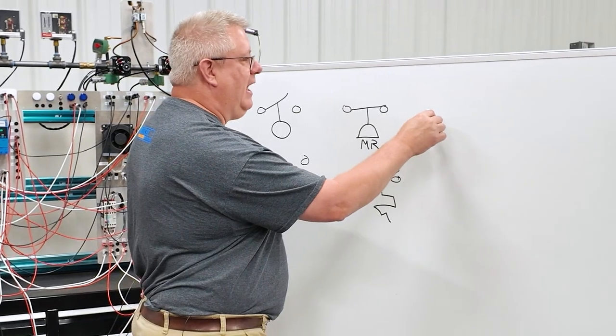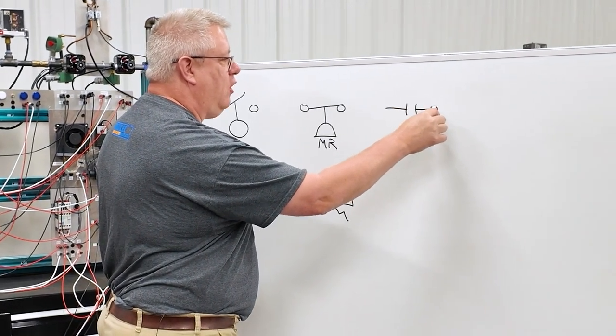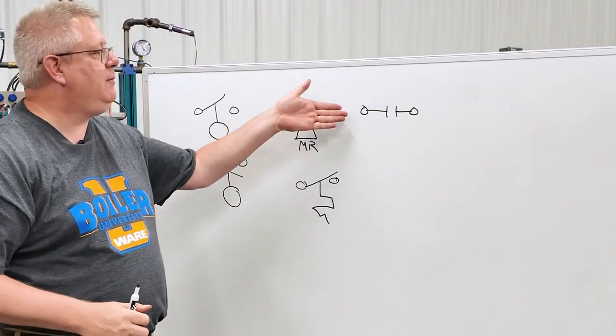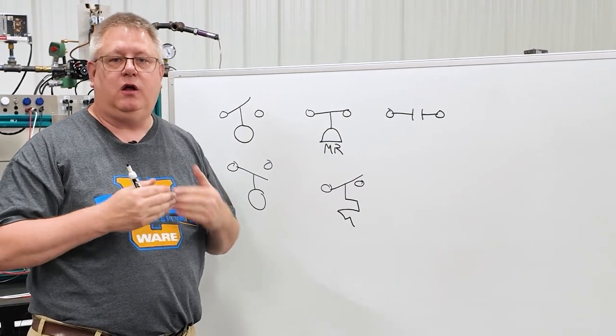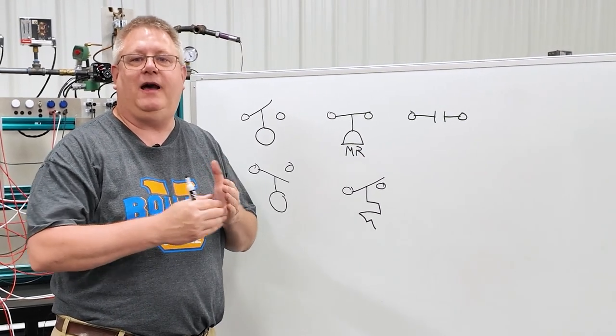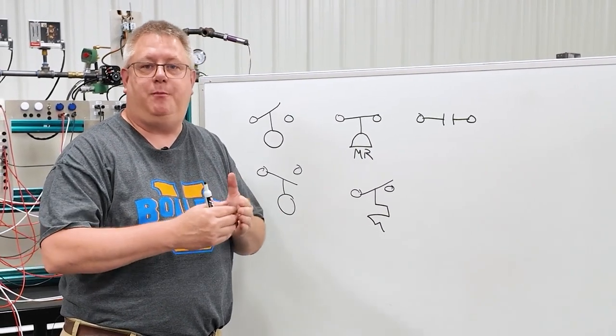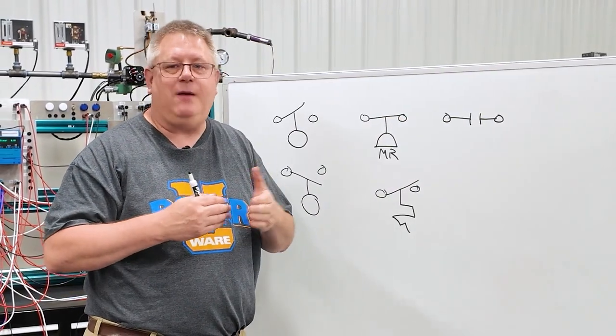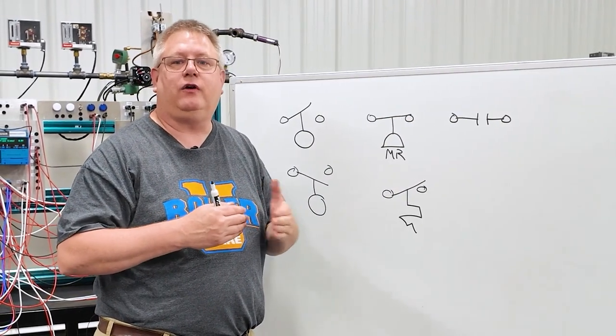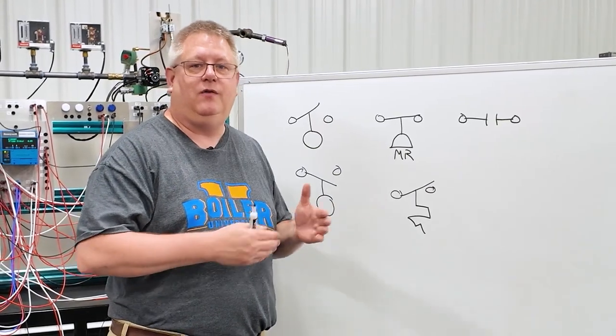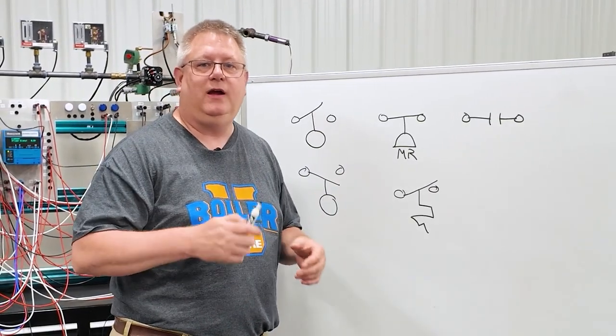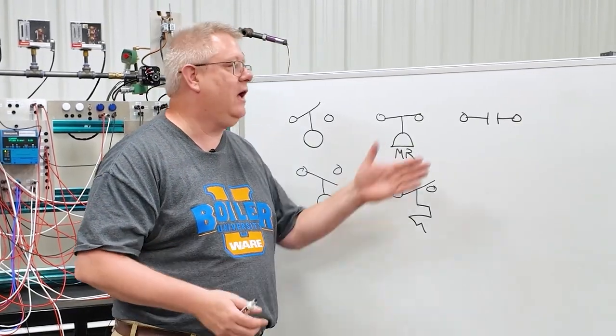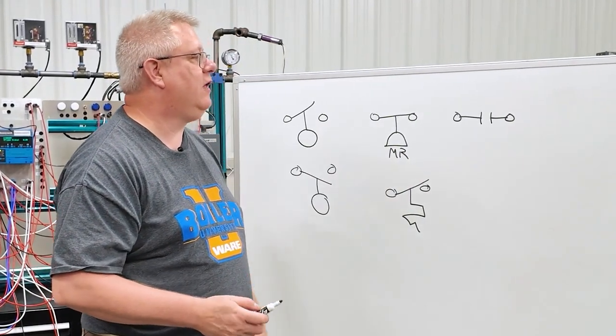If I've got relay contacts, it's going to show up as an open contact. So that would be pretty typical on a probe-style low water cutoff, where we might have an electronic-based switching system. Or it could also represent any type of relay contact in the circuit, whether it's a building management system that opens and closes, or it's a contact on a latching relay alarm or something like that.